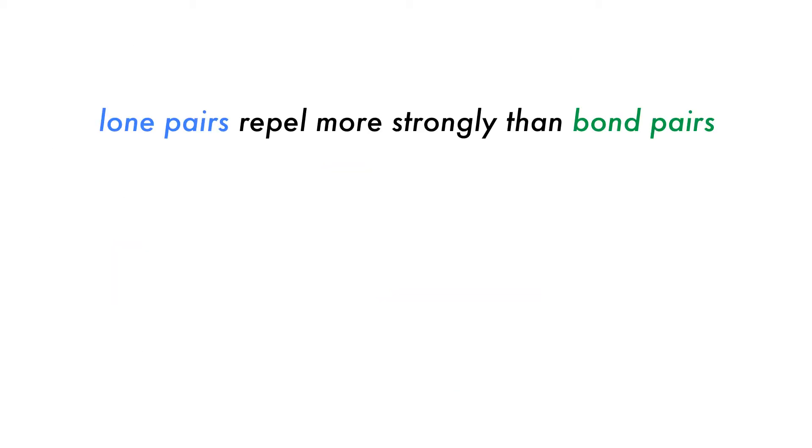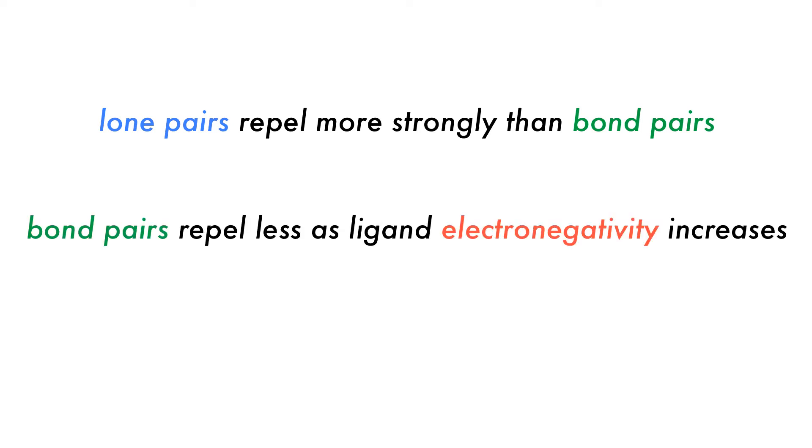Empirically, we can understand VSEPR using these rules: Lone pair repulsion is stronger than bond pair repulsion. The repulsion exerted by a bond pair decreases with increasing electronegativity of the ligand as the bond becomes more ionic. And finally, multiple bonds repel more strongly than single bonds.